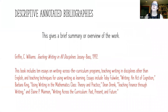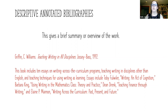Descriptive annotated bibliographies give a brief summary or overview of the work that you've looked at. For this example, 'Teaching Writing in All Disciplines,' the sample would be: this book includes 10 essays on writing across the curriculum programs, teaching writing in disciplines other than English, and teaching techniques for using writing as learning. It then lists some of the specific essays in this work — just a brief summary.